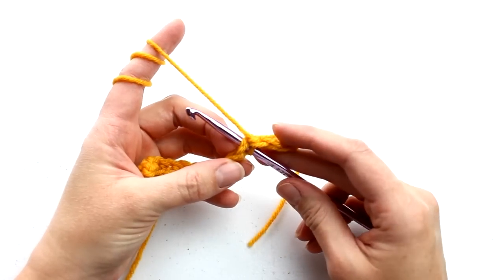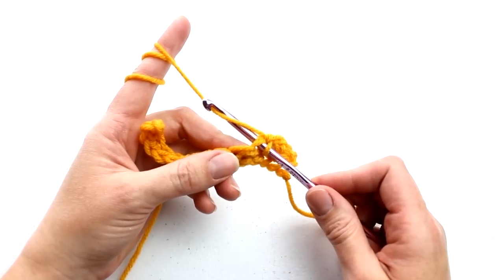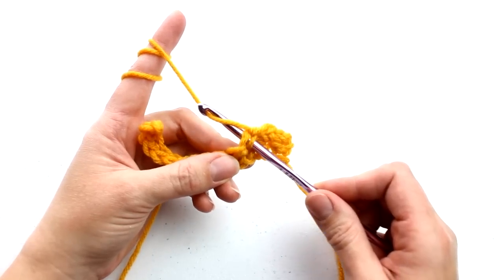Now normally when we crochet, we would yarn over the hook from the bottom of the yarn, and then grab the yarn from the top with your hook like this, and then we would bring the yarn through the stitch. But for this stitch, we are instead going to yarn over the hook from the top of the yarn like this.